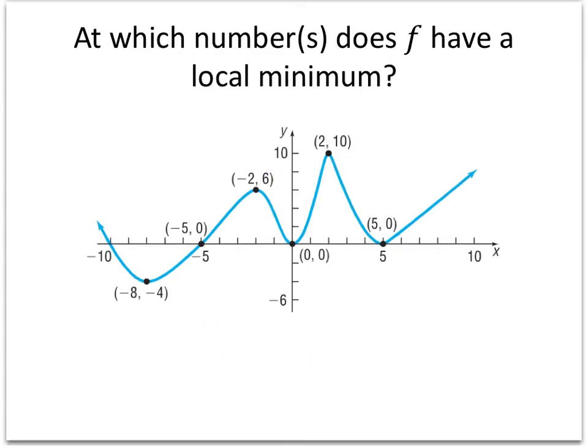Similar to the last question, at which numbers does f have a local minimum? So now instead of looking for a peak, we're looking for a valley. We're looking for a place where the y value is the lowest y value in the neighborhood. And we can see that that happens here at negative 8 comma negative 4, here at 0 comma 0, and here at 5 comma 0.